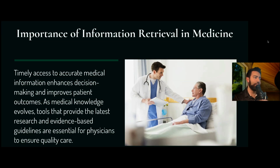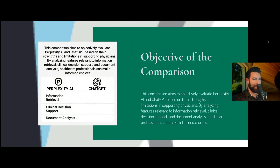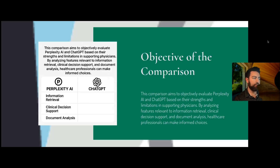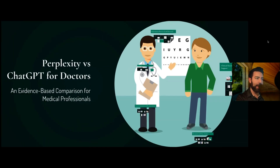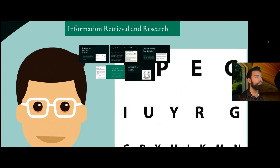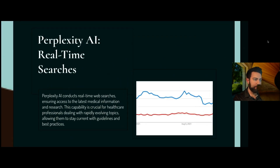The importance of information retrieval in medicine is why Perplexity is so relevant — you want timely access to the most accurate and latest guidelines and medical knowledge. In this episode we're going to compare and contrast Perplexity versus ChatGPT in terms of information retrieval, clinical decision support, documentation, and analysis, as well as some other abilities ChatGPT has that Perplexity doesn't.